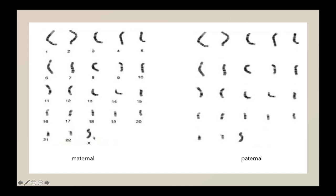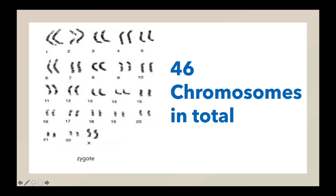Why do we have two copies of each chromosome, known as the homologous chromosomes? This is because during fertilization, each of our parents contributes one copy of each chromosome. Fertilization forms us as a zygote, causing us to have two copies of each chromosome, and they are known as the homologous chromosomes.